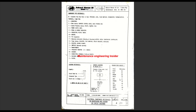Here we have the abbreviations for cable color codes. When you see GY it is gray, BK is black, BU is blue, BN is brown, GN is green, and RD is red. These are the letters used to represent cable colors in the electrical diagram.